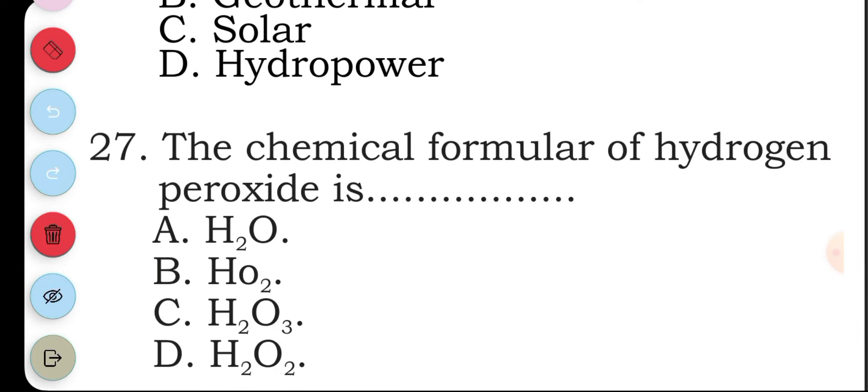Question twenty-seven: the chemical formula of hydrogen peroxide is. Looking through, this is not it, this is not it, this is also not it. This is H₂O₂: two atoms of hydrogen, two atoms of oxygen.